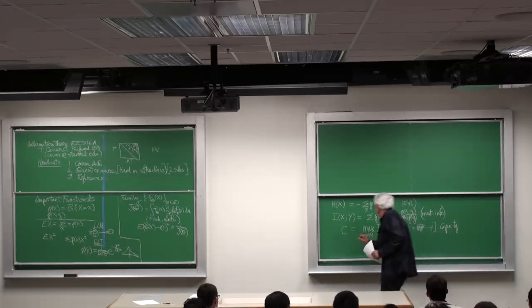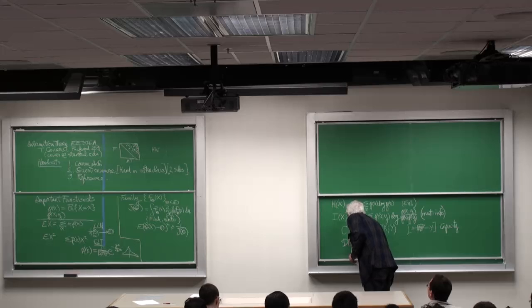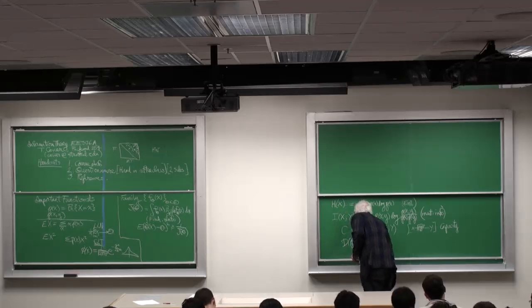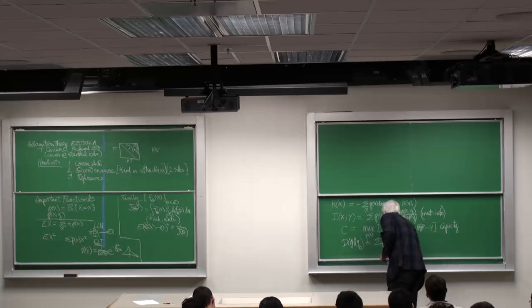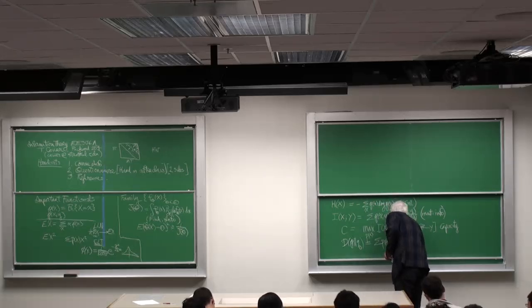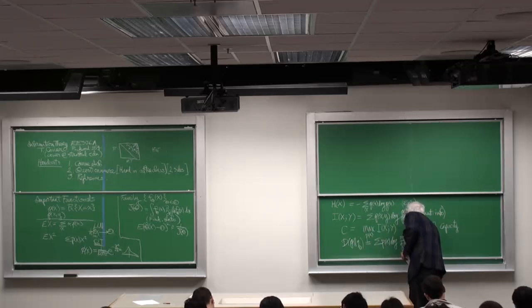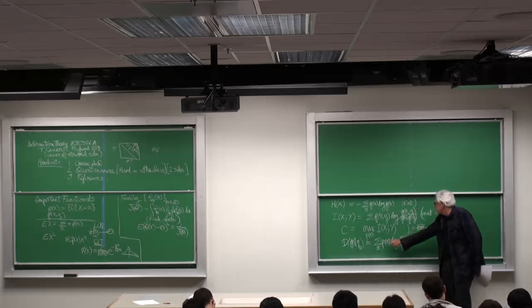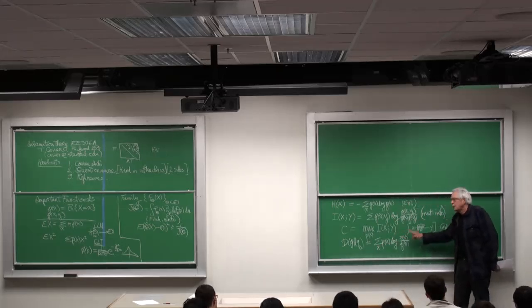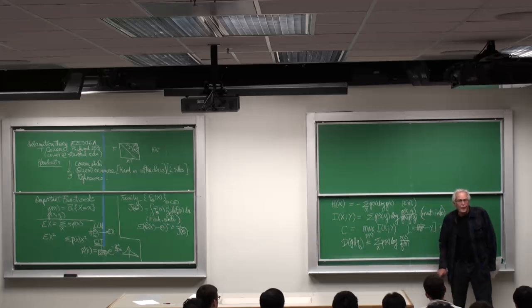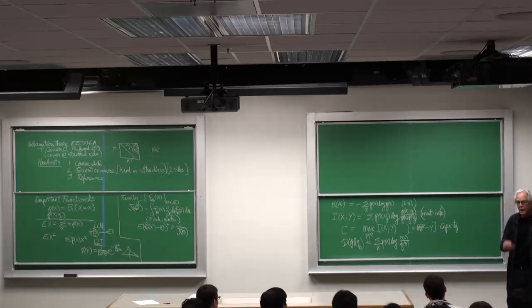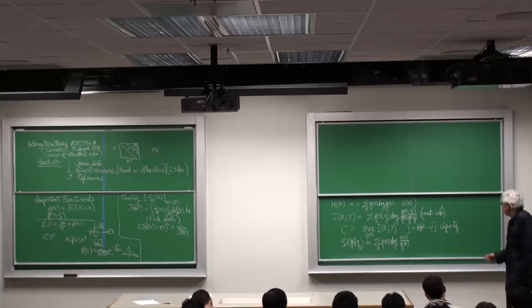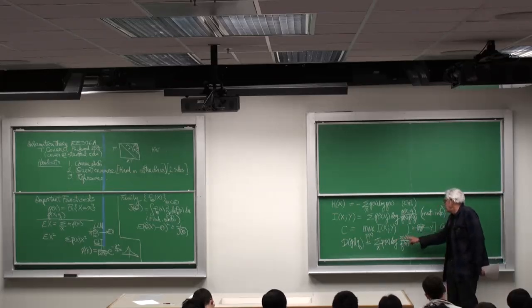And here's another functional, D P Q equals summation p of x log p of x over q of x. This is the expected value of the log likelihood ratio of p over q and you can expect it to come up as the exponent in the probability of error of distinguishing samples that are drawn.